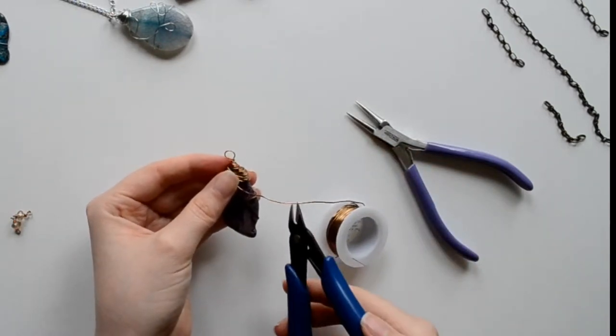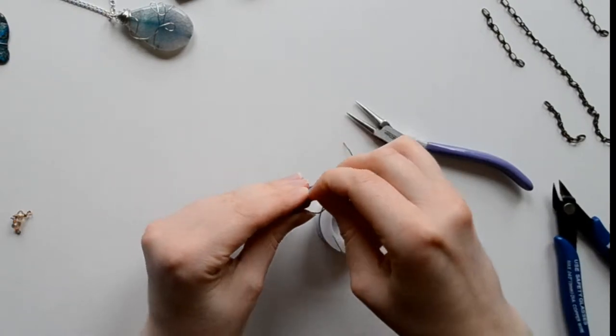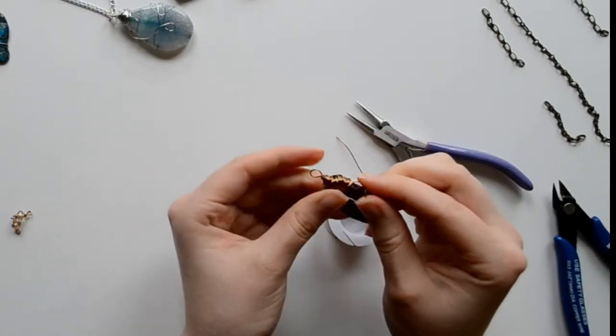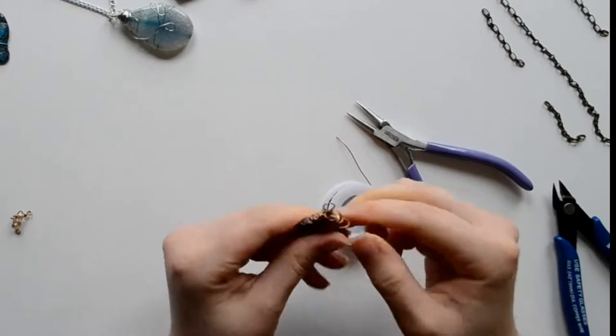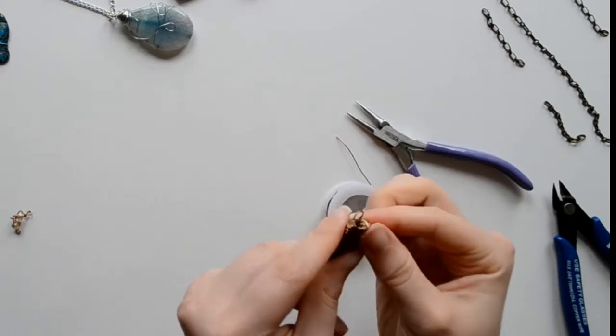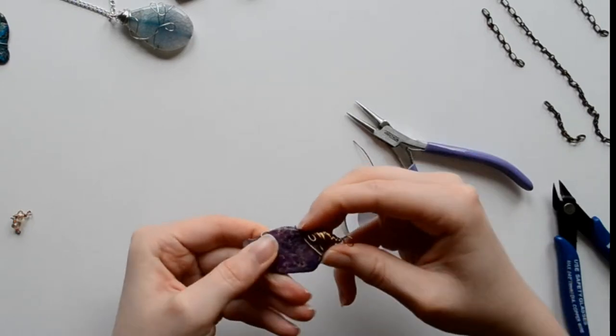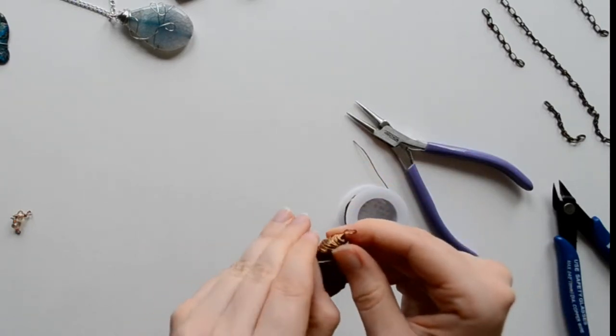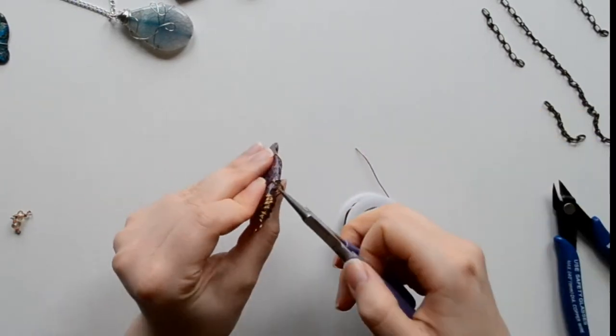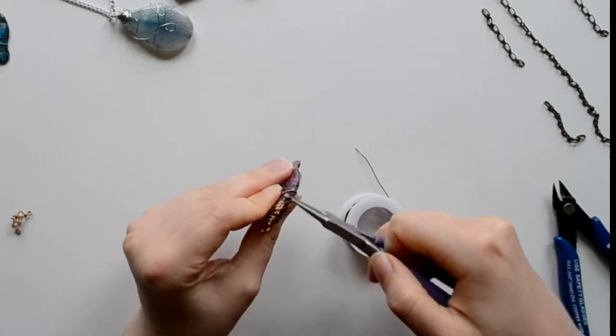And I'm going to trim off my wire and I'm going to try to push it through the hole. Now this would have been perfect if I would have cut the wire a little shorter, but I didn't. So you can see that I'm struggling and I'm trying to make it snug, and it's just not working for me.